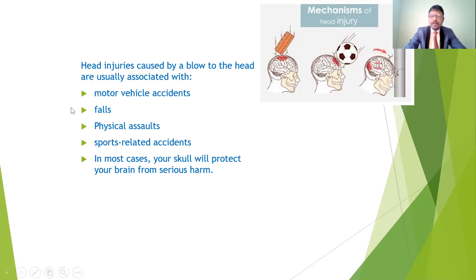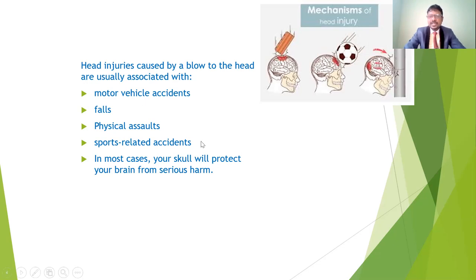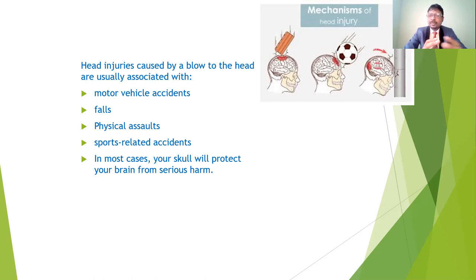Other cause factors are falls — if any object falls on the head, there is a chance of head injury. If a person falls from any height, such as during construction of buildings, they may get head injuries. If any heavy object falls on the head during construction, it can cause head injury. Physical hazards — if anybody is hit on the head with an iron rod or any hard object — can also cause head injuries. In sports-related accidents, especially rugby, football, hockey, high jumps, and long jumps, there is also a chance of head injuries.